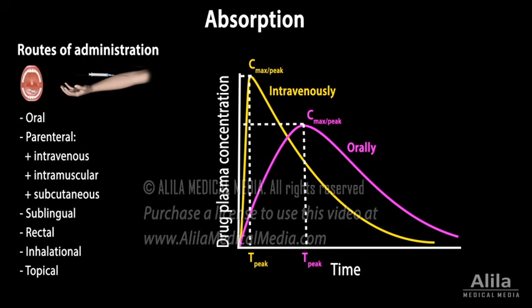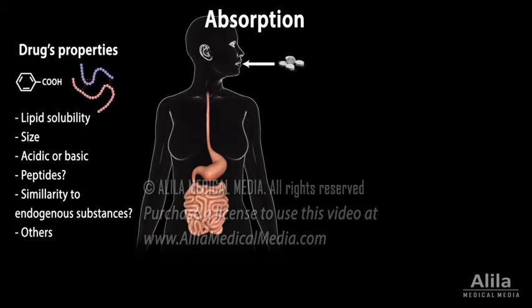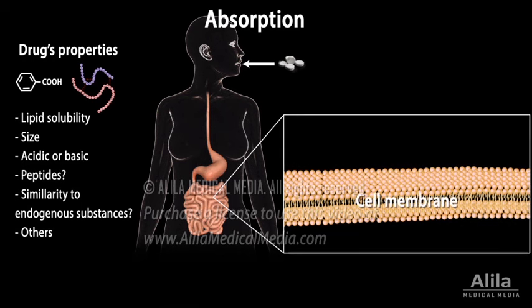Oral administration is the most common route because of its convenience, but it may not be suitable for some drugs. Drugs given orally must survive the action of stomach acid and digestive enzymes. Peptide drugs, such as insulin, are easily degraded in these conditions and cannot be given orally. Absorption of oral drugs involves transport across membranes of epithelial cells in the digestive tract, primarily the small intestine.